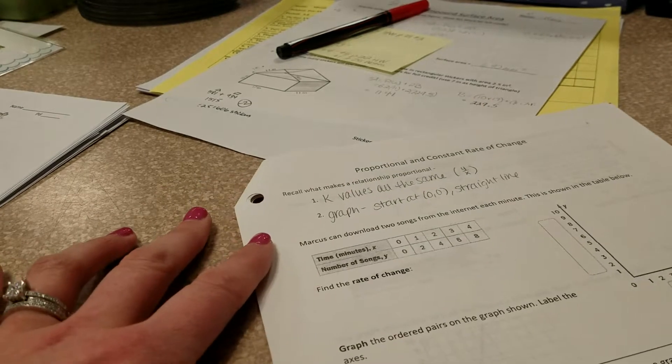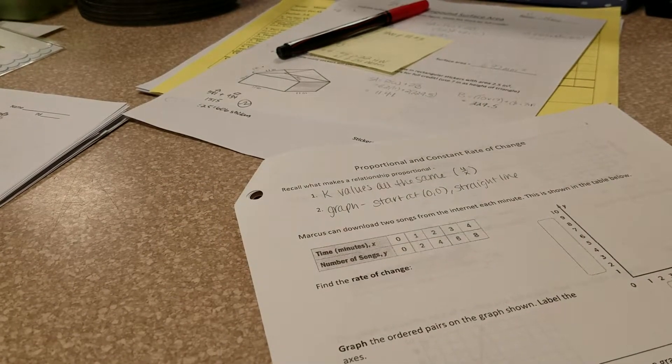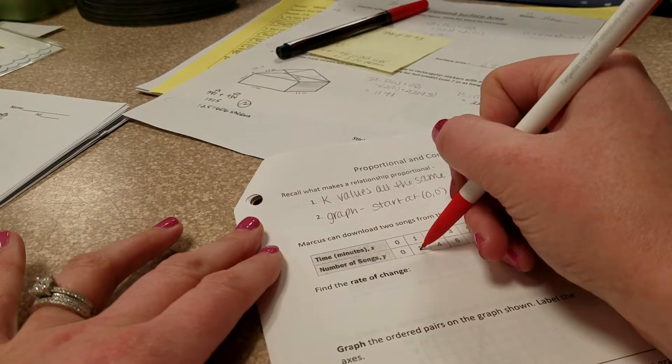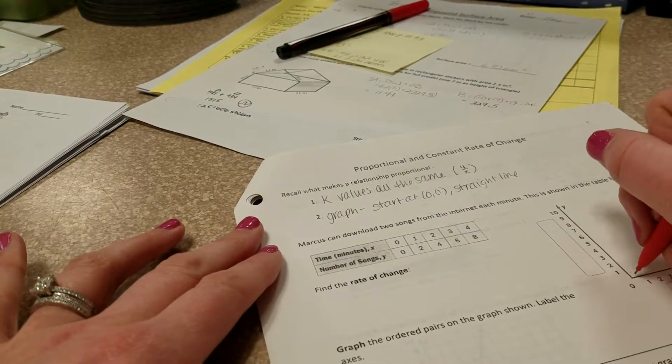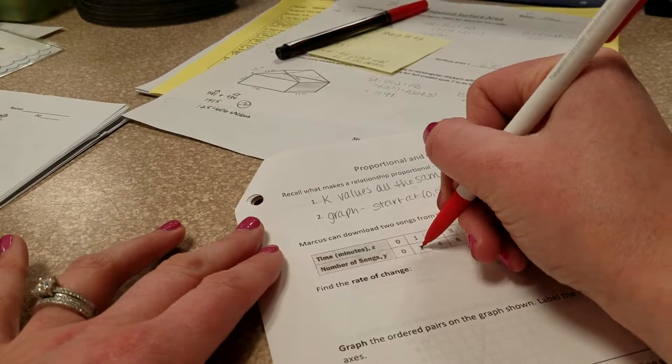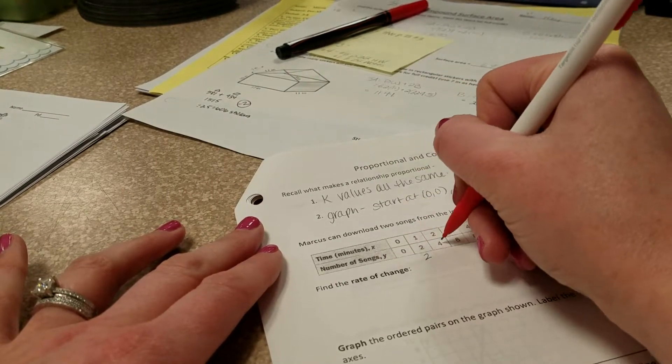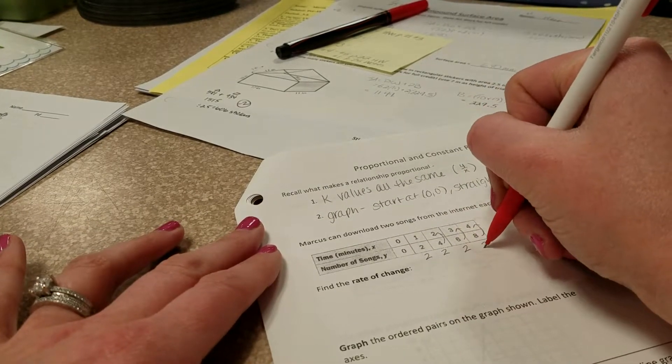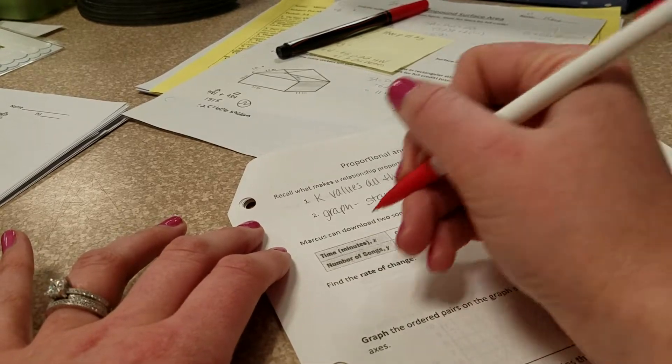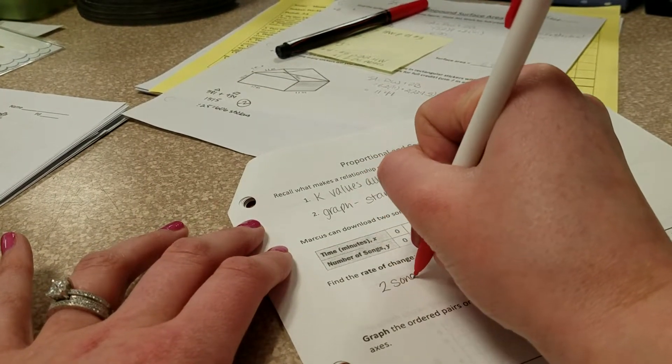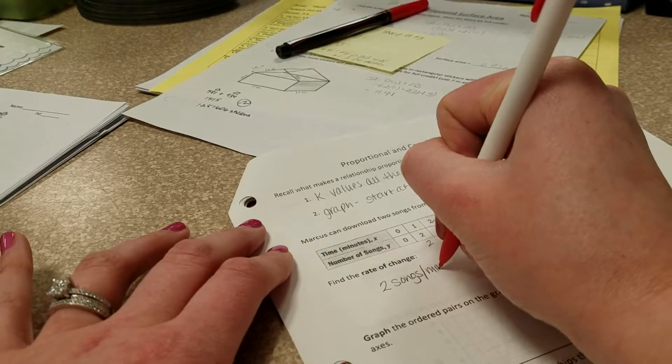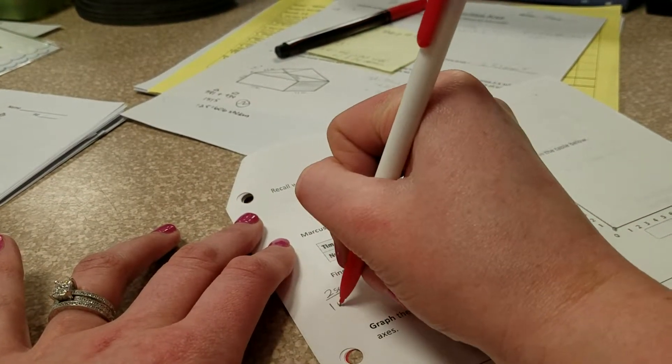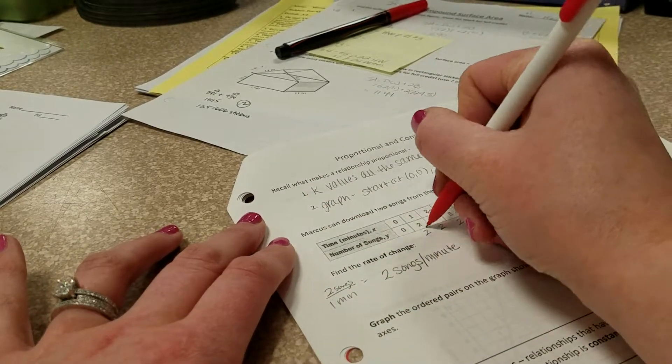So what we can do is take a look at Marcus's situation here. Finding our rate of change, which is just our k value here, we're going to do y divided by x. So the zeros aren't going to count because we know that's where it has to start anyway. 2 divided by 1 is 2, 4 divided by 2 is 2, 6 divided by 3 is 2, 8 divided by 4 is 2. So our rate of change is going to be 2 songs per minute. And we can get that by doing 2 songs divided by 1 minute, taking our y divided by our x.